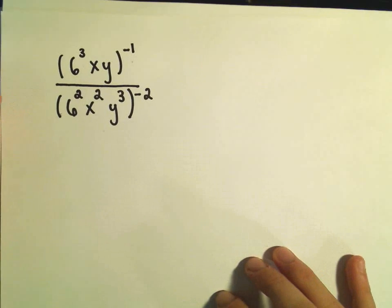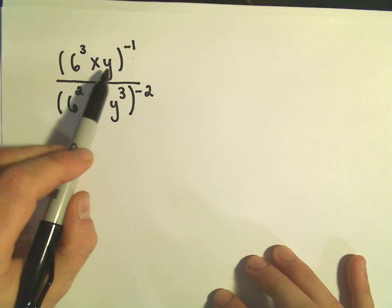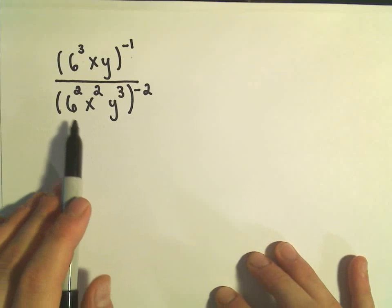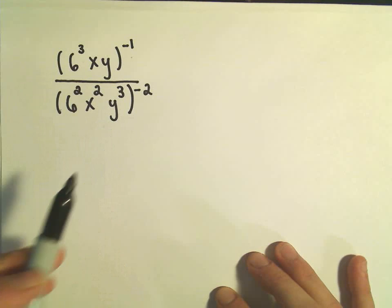Alright, so one other one here. We have 6 to the 3rd, x, y to the negative first. And then we have 6 squared, x squared, y cubed to the negative second.